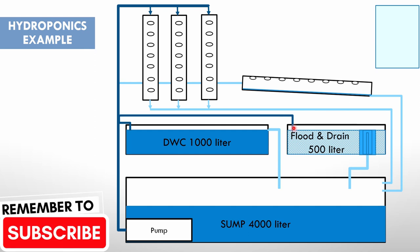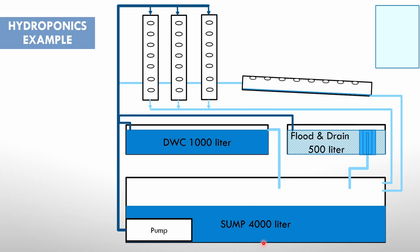Right, so here's a total system that we're going to do a quick example on. You see you've got three vertical towers, you've got an NFT system, you've got a flood and drain bed, and you've got a deep water culture bed there. Your sump is 4000 liters. So let's start with that. The first thing, your vertical towers, there's three of them, and we took 20 as our amount that we're going to select there.